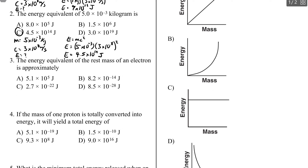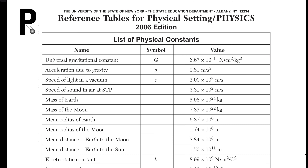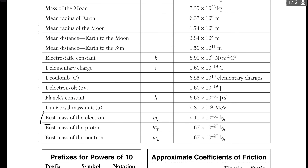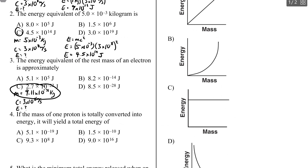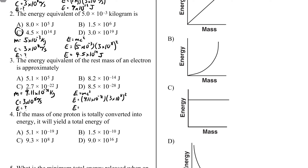Number three: the energy equivalent of the rest mass of an electron is approximately what? The mass is found on page one of the reference table — the rest mass of an electron is 9.11 times 10 to the negative 31 kilograms. Using E equals MC squared and substituting in the values, you get 8.2 times 10 to the negative 14 joules. Not a whole lot of energy, but it's just one electron being converted.